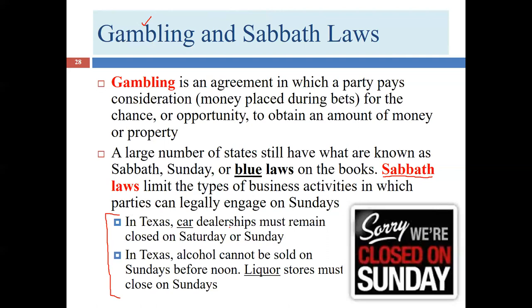Texas rules provide that a car dealer can choose to be closed on Saturday or Sunday, and most choose to be closed on Sunday. It makes sense for car dealerships to want this: does allowing a car dealership to be open both Saturday and Sunday mean people buy twice as many cars? No — a car isn't an impulse buy. If a dealership is open six days a week it will sell as many cars as if open seven, but by closing one day it restricts overhead expenses.